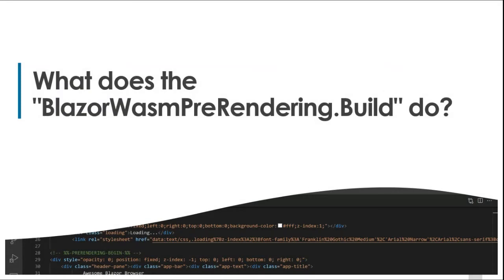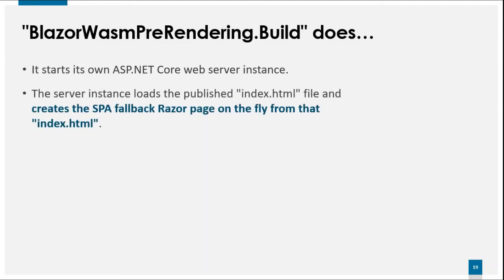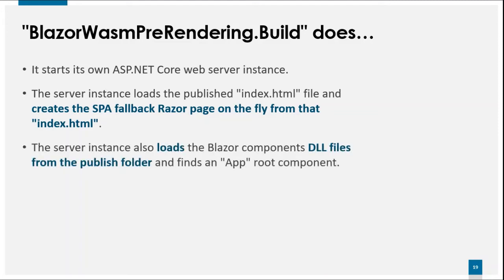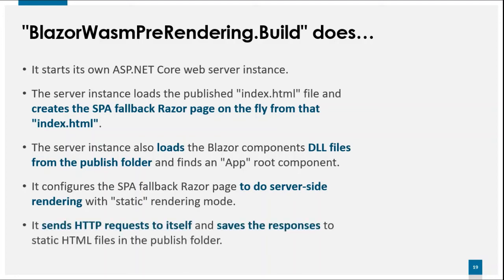Let me talk about how the Blazor WASM Pre-Rendering Build package works. After the typical publishing process is finished, it starts its own ASP.NET Core web server instance inside its process space. The server instance loads the published index.html file and creates a SPA fallback Razor page on the fly from that index.html. It also loads the Blazor component DLL files from the publish folder and finds the app root component. Then it configures the SPA fallback Razor page to do server-side rendering with static rendering mode.